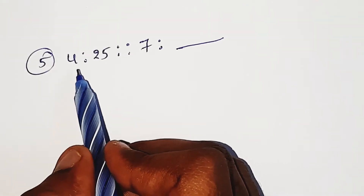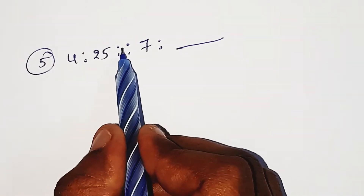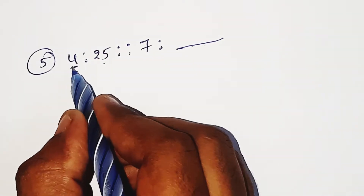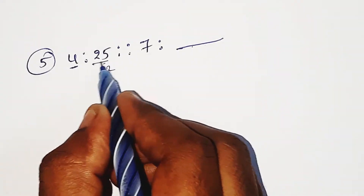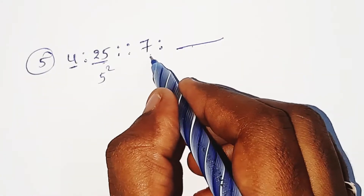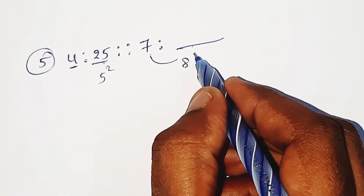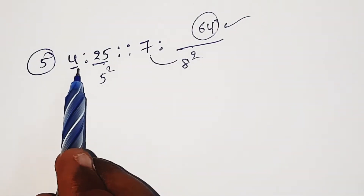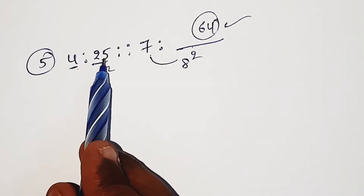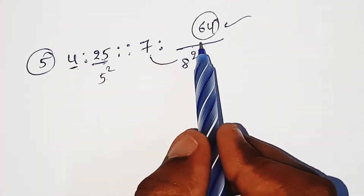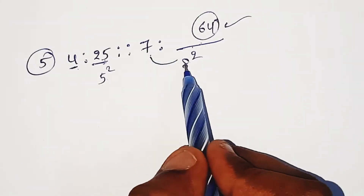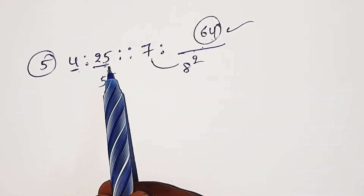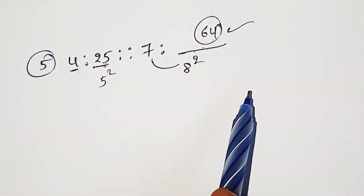Next problem: 4 colon 25, proposition 7 colon missing number. 5 squared is 25, here we have 7. 8 squared is 64. Here 4 is related to 5 squared which is 25, and 7 is related to 8 squared which is 64. 64 is the answer. This is easy to solve.